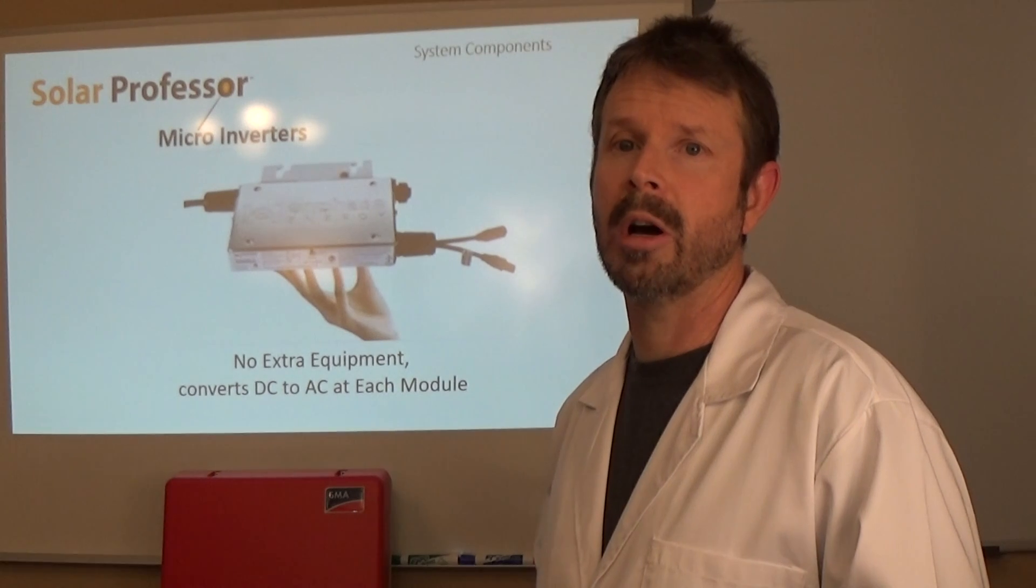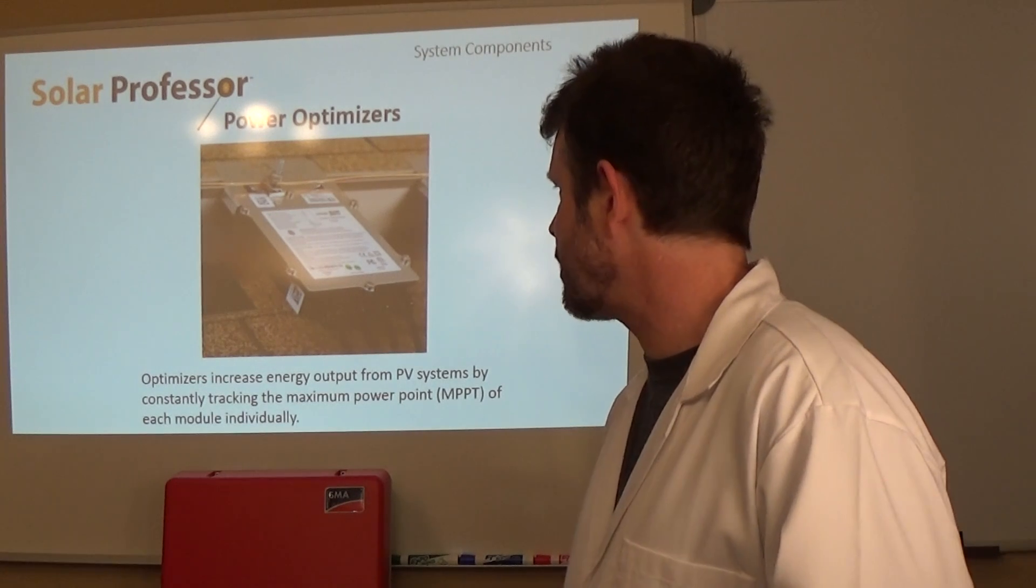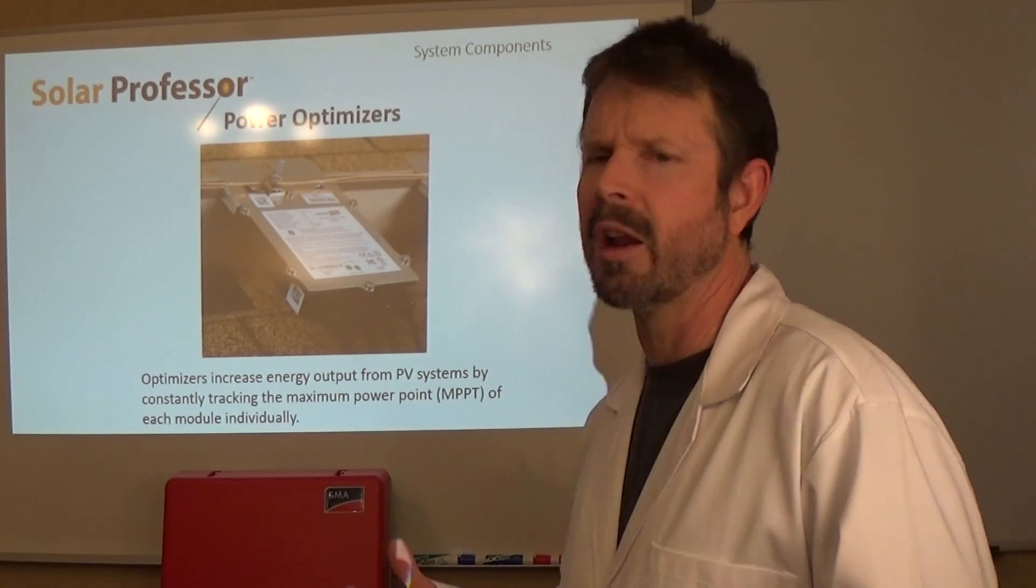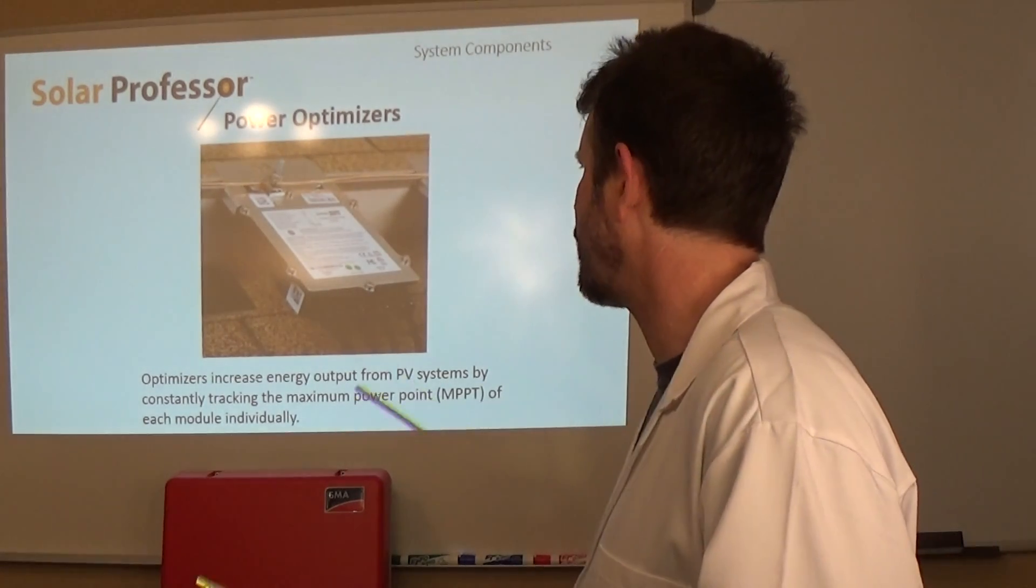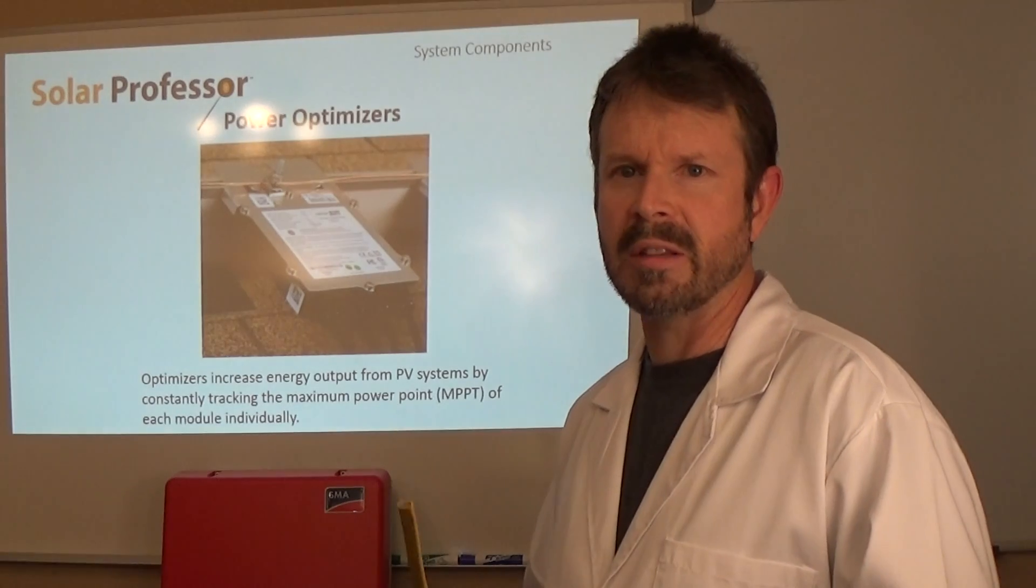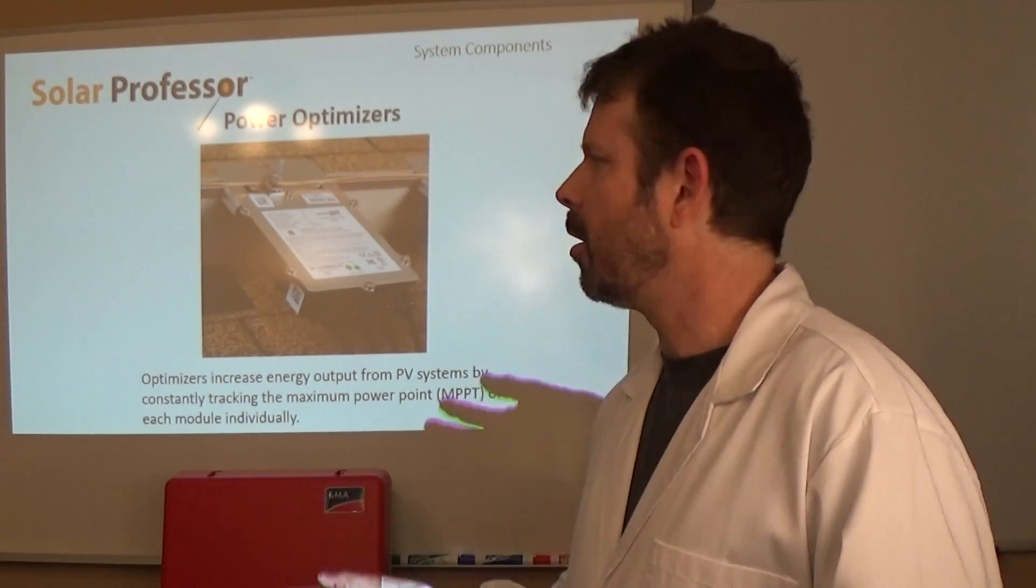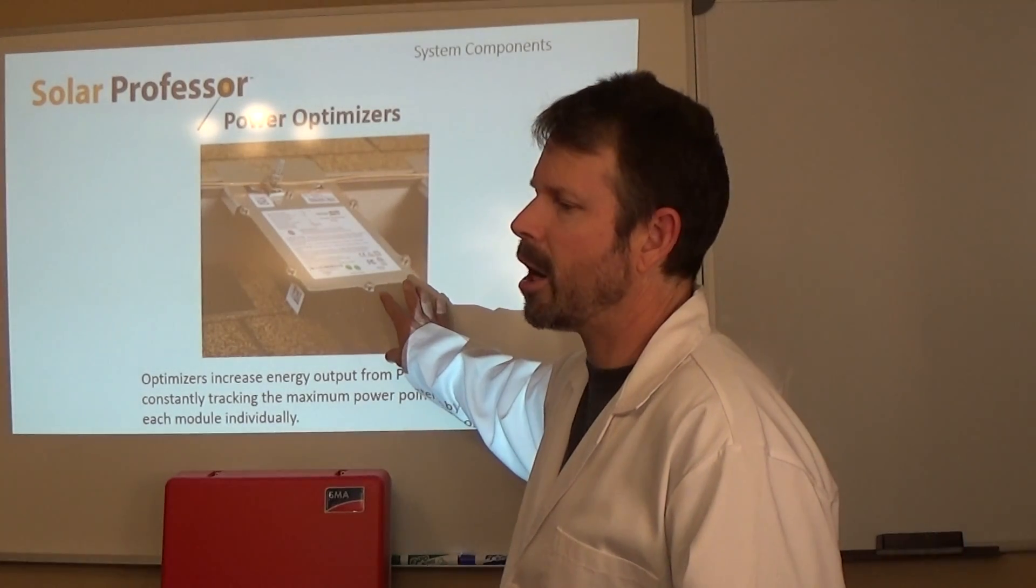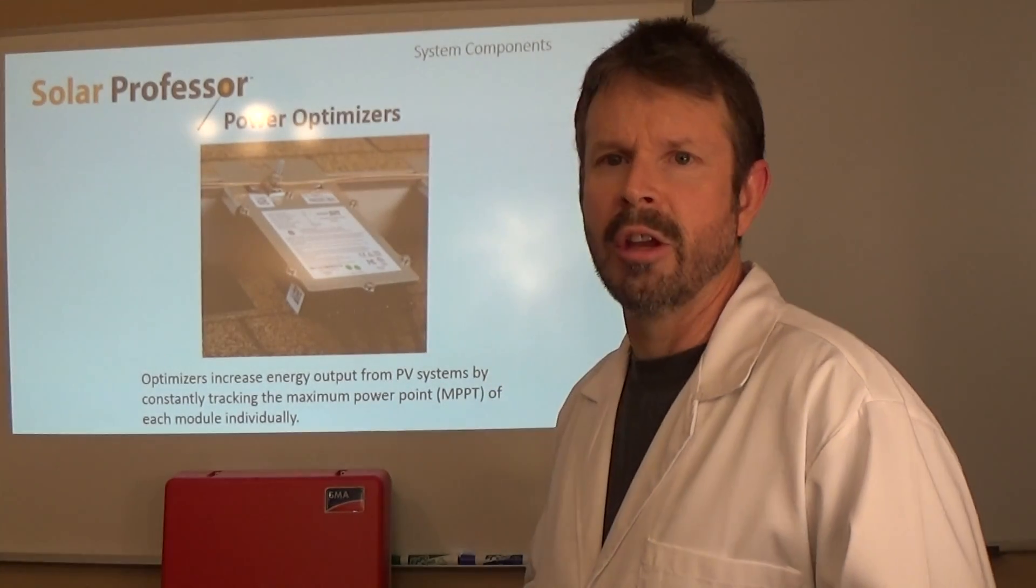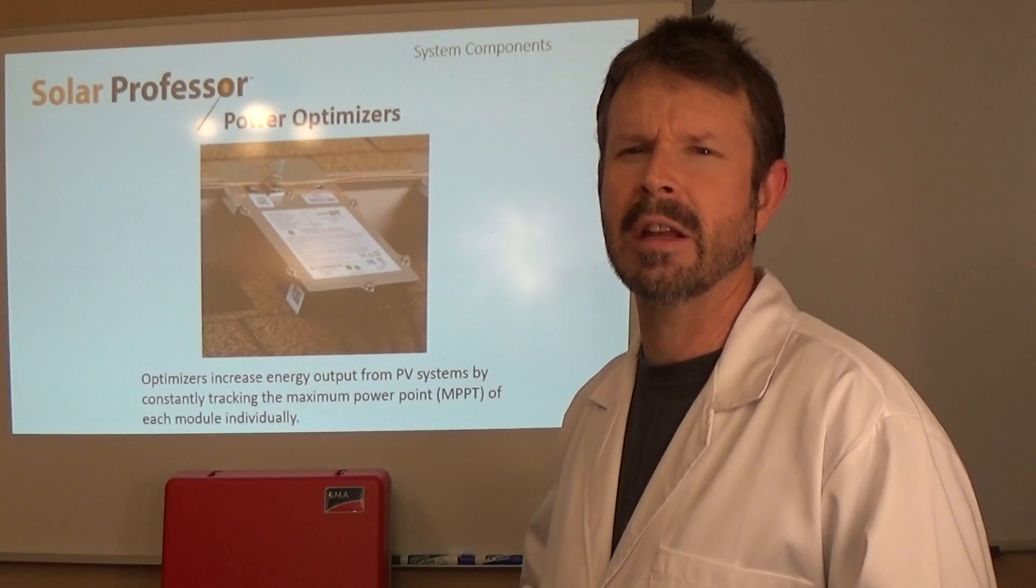Here's power optimizers, they increase energy output from PV systems by constantly tracking the maximum power point. In fact really all modern inverters are going to provide MPPT. A power optimizer is very similar to a micro inverter in that you have to have one per solar panel on the roof. There's less components in a power optimizer and power optimizers keep the current as direct current off of the roof, it's not alternating current off the roof. That's an interesting difference, that's why you have to have the inverter box as well.